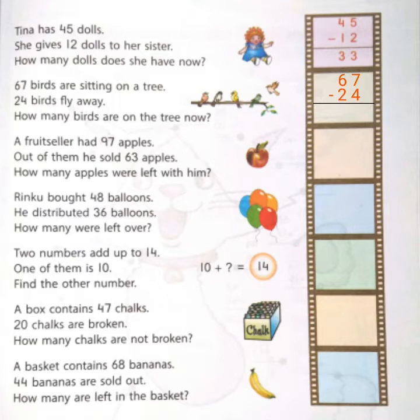So 67 minus 24. At 1's place, we have 7 and 4. 7 minus 4 is 3. And at 10's place, we have 6 and 2. So 6 minus 2 is 4. So, all together, how many are left? 43 birds. 43 birds are on the tree now. All right?